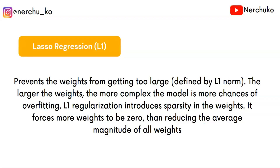In Lasso Regression, weights can converge to zero. If a feature is unimportant but has large weights, L1 regularization will drive those weights to zero. In L1 regularization, unimportant feature weights become zero, effectively removing those features. In L2, the weights are reduced to a very small number like 0.0001 rather than zero.